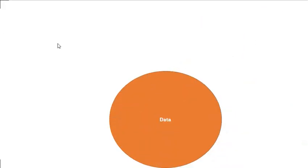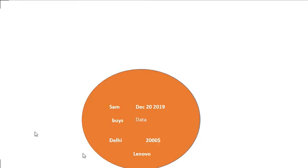Data is an isolated piece of information or raw facts. For example: Sam, December 20 2019, Delhi, two thousand dollars, Lenovo — these are isolated pieces of information.